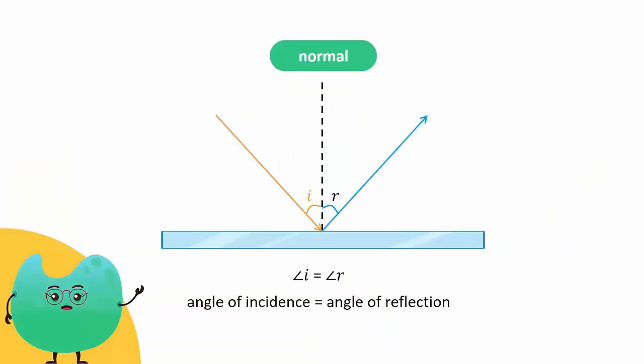If the angle of incidence is 40 degrees, then the angle of reflection will also be 40 degrees.